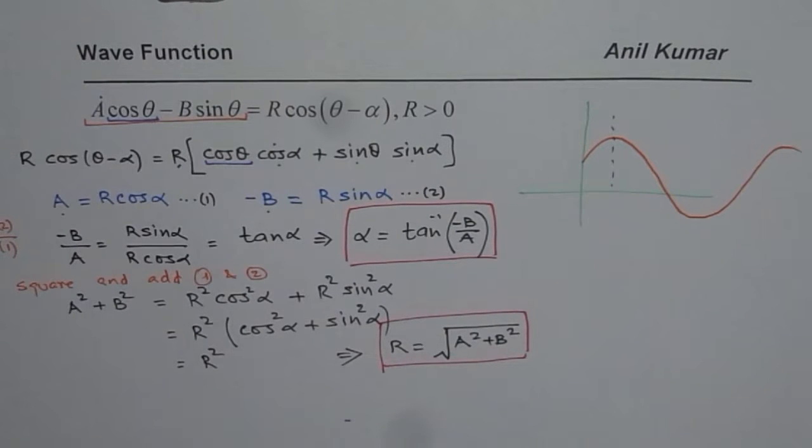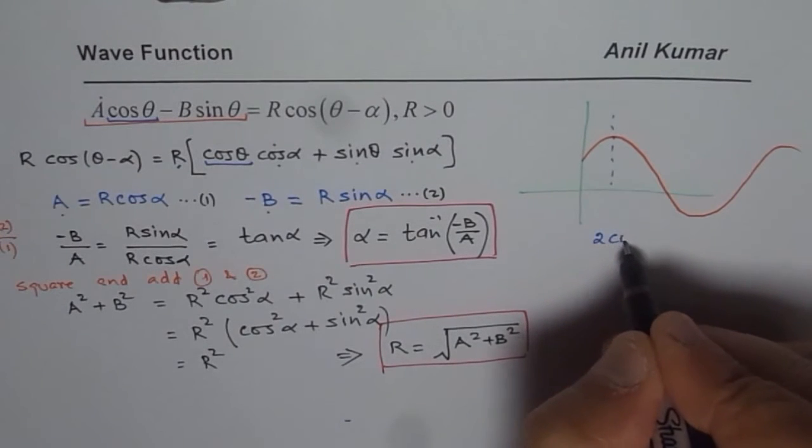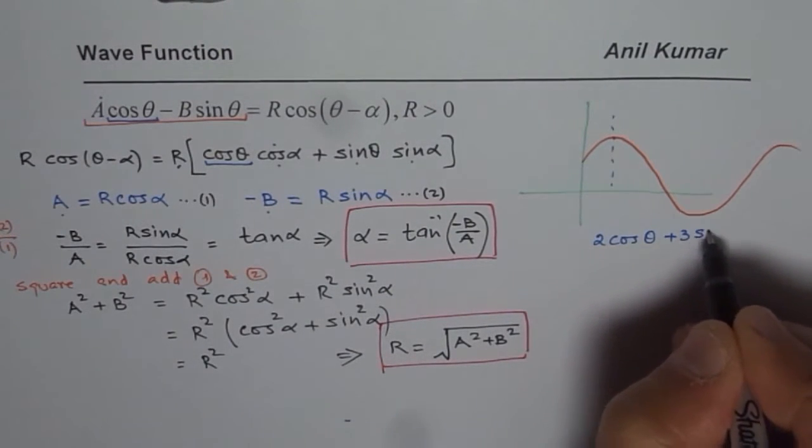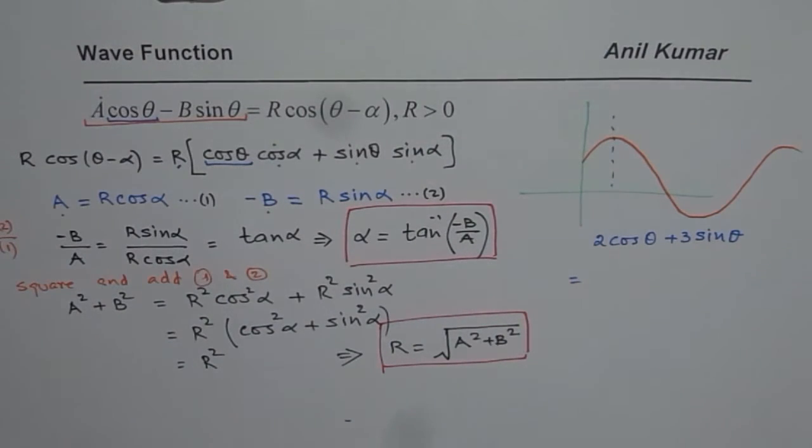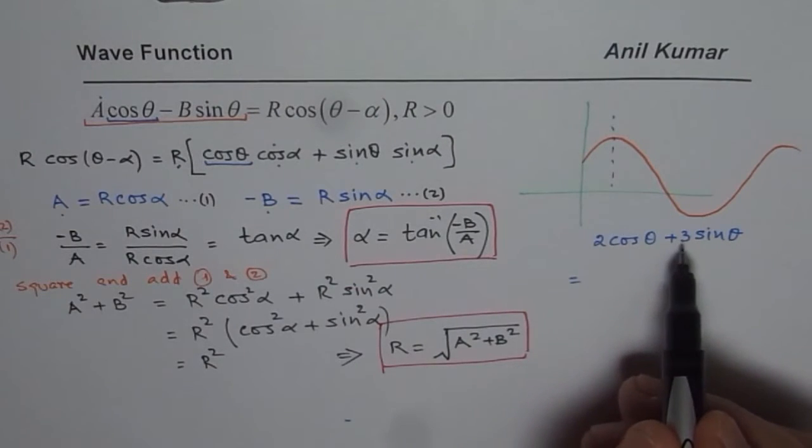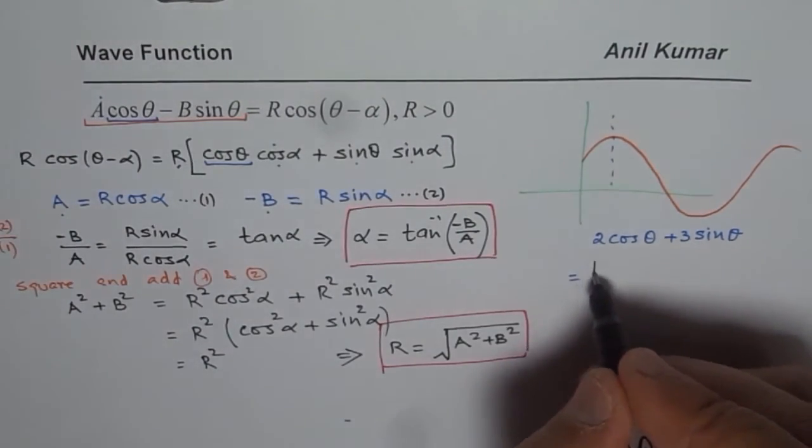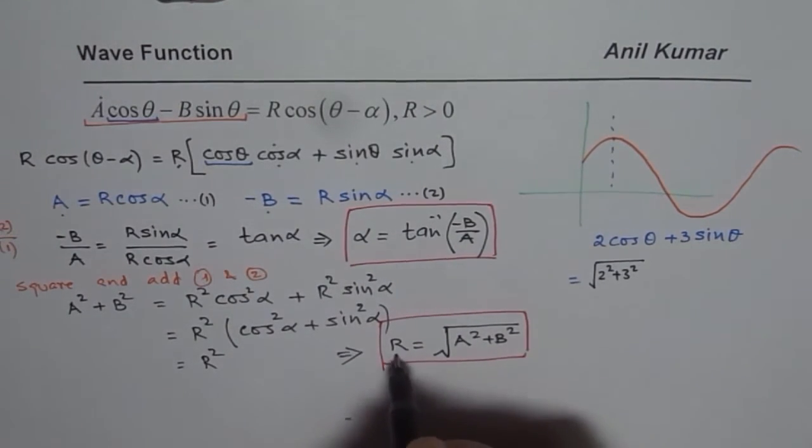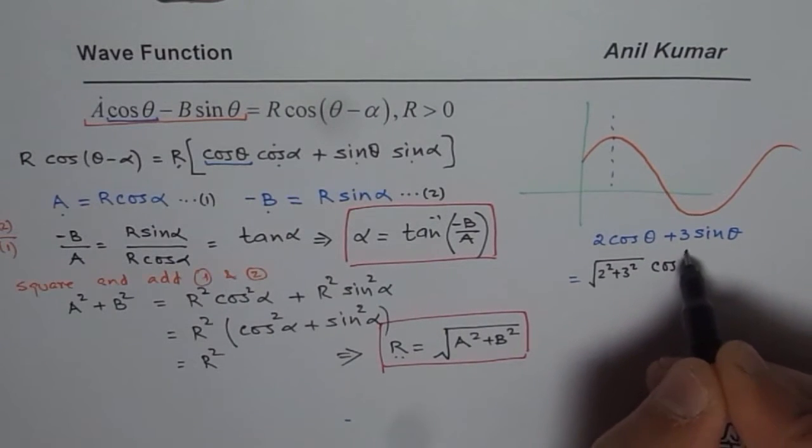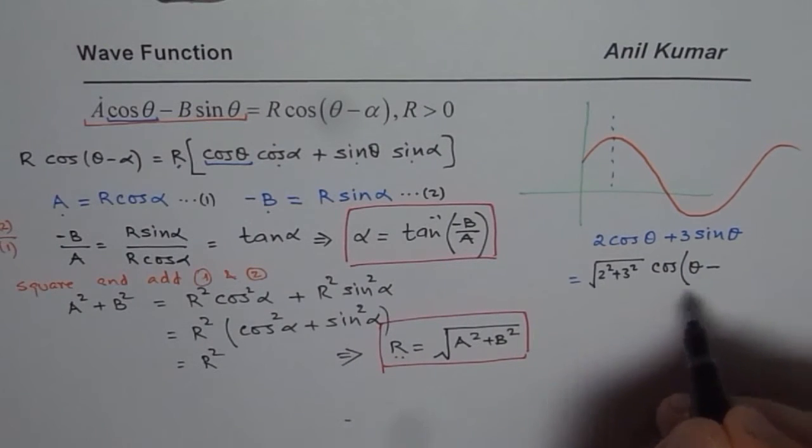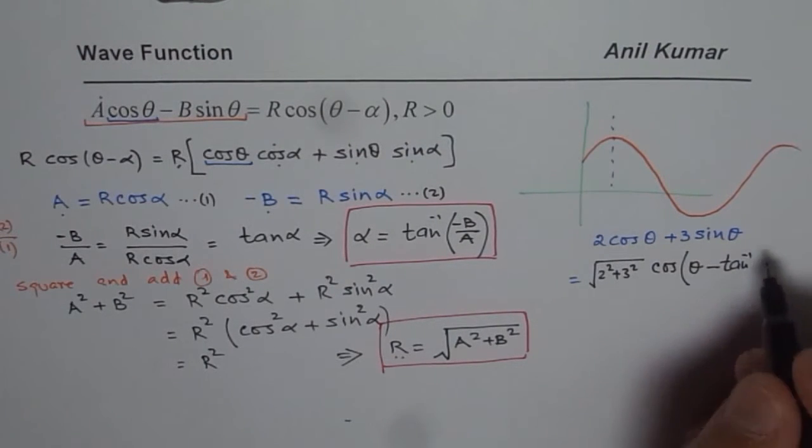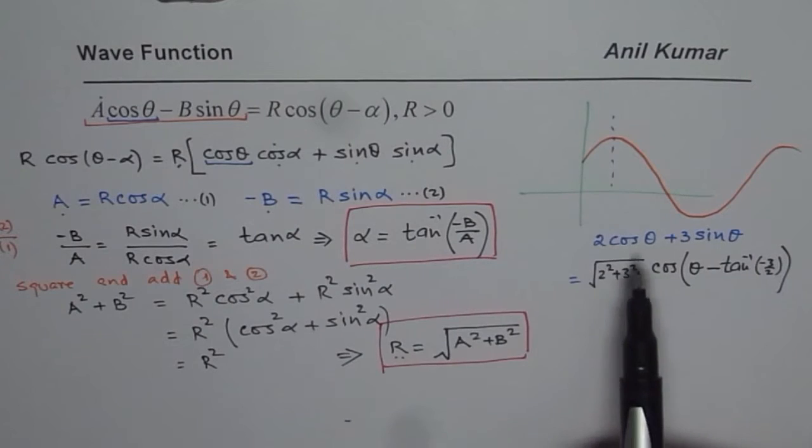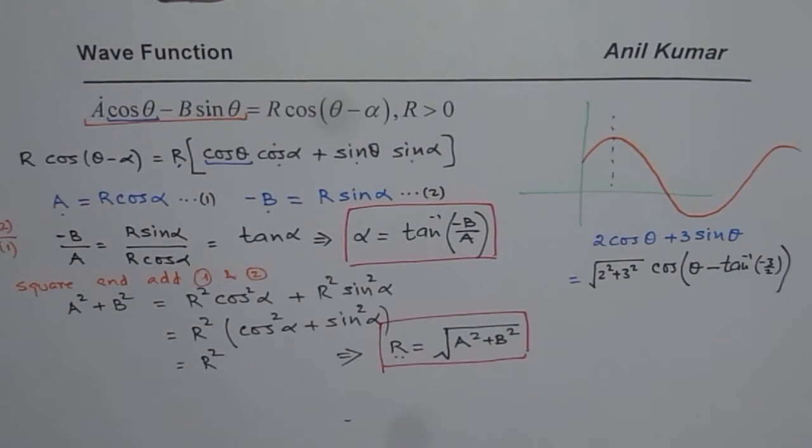If I give you a question, for example if the equation is let's say 2 cos θ plus 3 sin θ, and we have to write this equation in this form, how do we do it? We can find R by adding squares of these. So we get R as square root of 2² plus 3², times cos(θ - α). α will be tan inverse of minus 3 over 2.